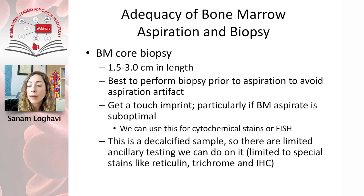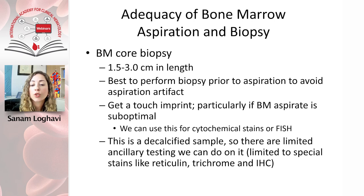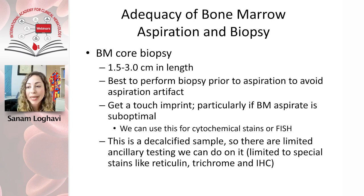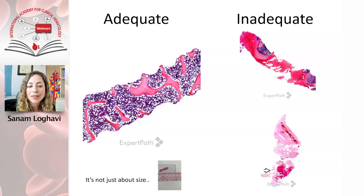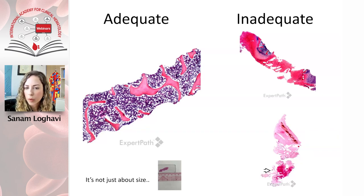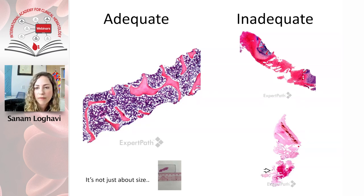Remember, the core biopsy is a decalcified specimen — we have to decalcify the bone to cut the block, which limits ancillary studies. You can't just send the core biopsy for NGS. Here are examples of adequate versus inadequate biopsies: the left-hand side is a perfect adequate biopsy — intact and long enough. The inadequate ones fail not just because of size: one is mostly blood with a little bone marrow, and another is essentially just periosteum with no marrow space available for evaluation.